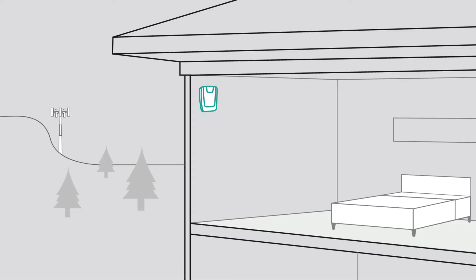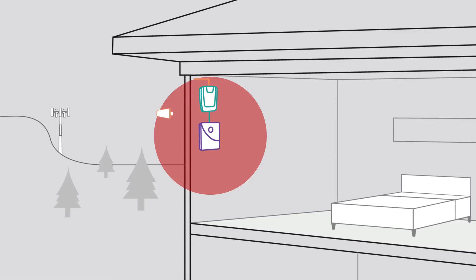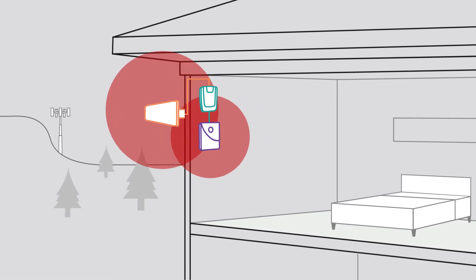Oscillation happens when your booster's inside antenna and outside antenna are too close together, causing feedback or noise to the booster system. This is like when you bring a microphone too close to a speaker and you get that loud feedback noise.